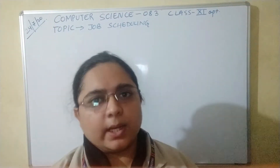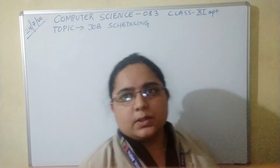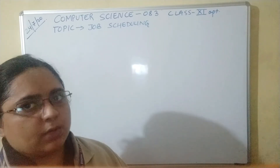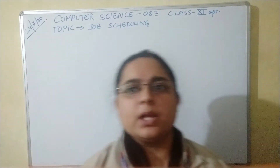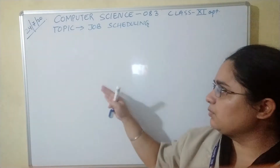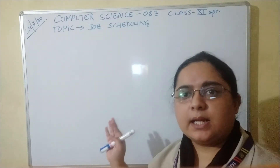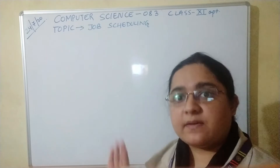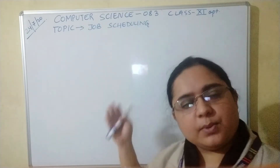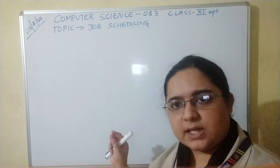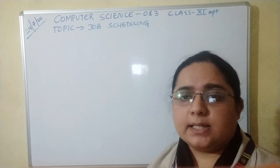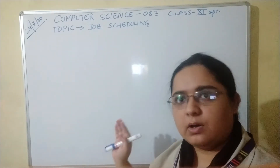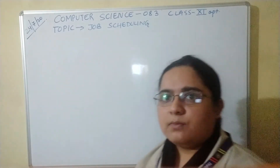Good morning students, welcome to the computer class. In today's class we are going to study about job scheduling. Job scheduling means how to schedule the CPU so that it can execute all the processes in a proper manner, such that the CPU is never idle — or even if it is idle, it is idle only for a very short period of time, not for extended periods. So CPU utilization has to be maximum at all times.